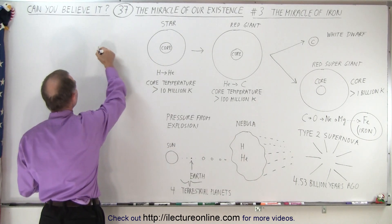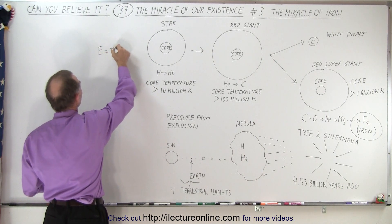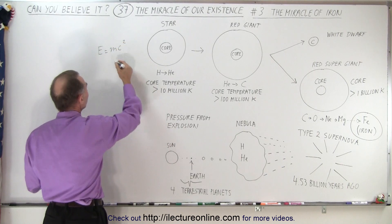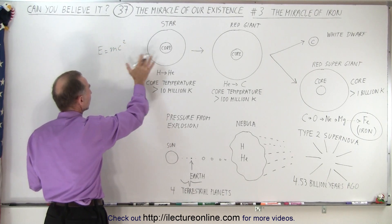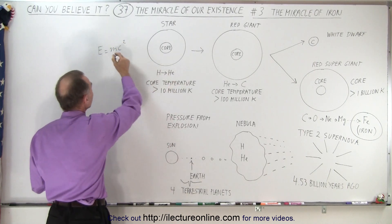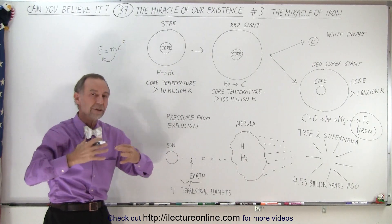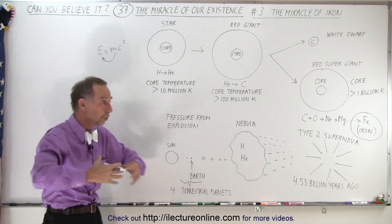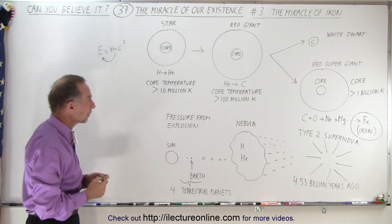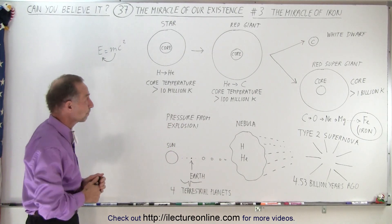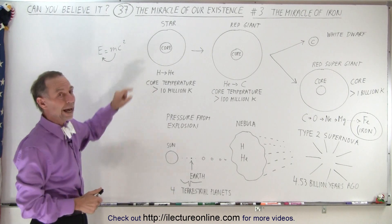It actually uses the E equals MC squared concept, where some of the mass that's lost by this conversion from hydrogen to helium gets turned into energy. That is what produces the enormous amount of energy that all stars are able to put out into the environment. Our Sun is no exception. So all stars do that.